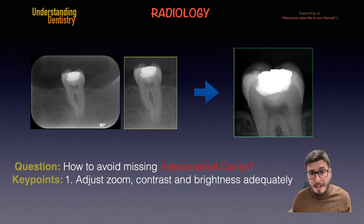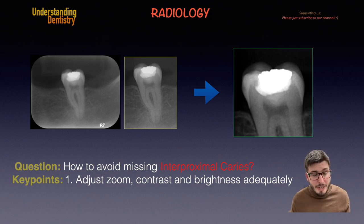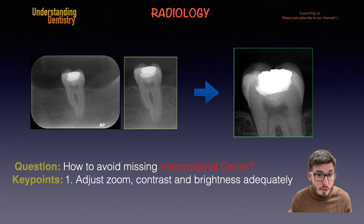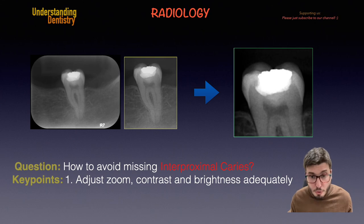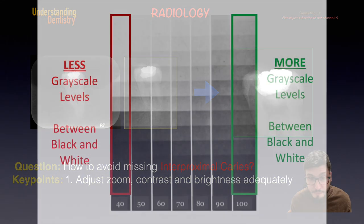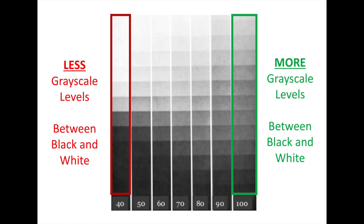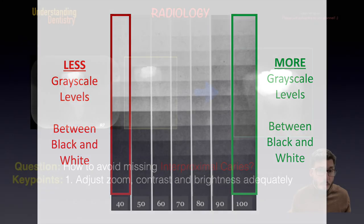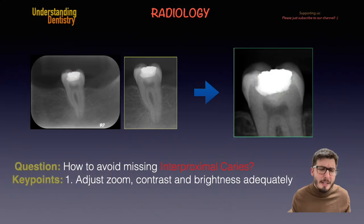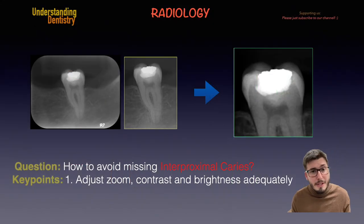Nowadays we are dealing with digital images, so we can adjust the zoom, contrast, and brightness on our software. When I say contrast, I refer to the contrast scale — the gray scale levels between black and white. If we have a nice contrast scale, it's better and easier to diagnose interproximal caries.